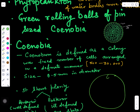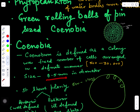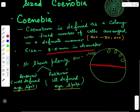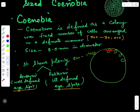The coenobium is a ball-like structure with cells arranged in a definite manner. The number of cells varies — it can be 500, 600, 1000, 1500, ranging from 500 to 30,000 depending upon the species of Volvox. The size is about 0.5 mm in diameter. It shows polarity, with one side being the anterior and the other the posterior.